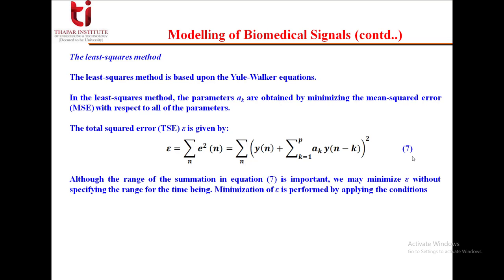Although the range of summation in this equation is important, we may minimize ε — the total squared error — without specifying the range for the time being. Minimization of ε is performed by applying the conditions ∂ε/∂a_k = 0 for k ranging from 1 to p.